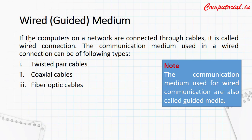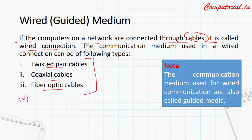If the computers on a network are connected through cable, it is called a wired network. We have three types of cables used in general: twisted pair cable, coaxial cable, and fiber optic cable. There is also a fourth category as homework for you — that is Ethernet.